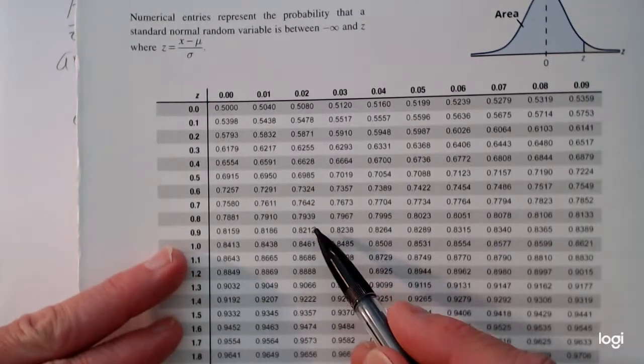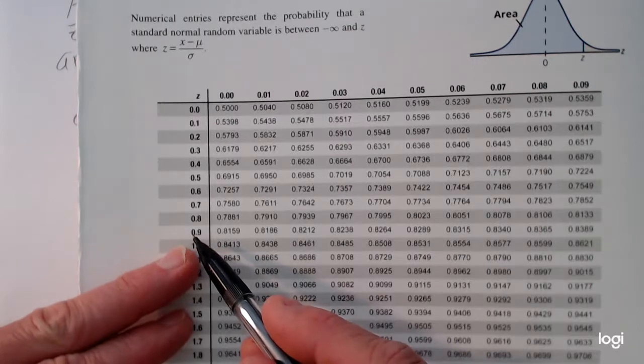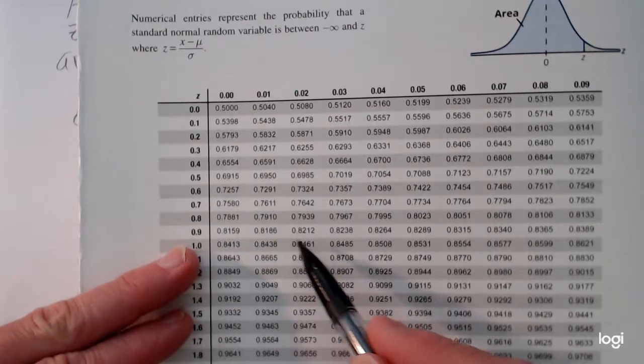So 0.8212, reading to the left, that's going to be a z-score of 0.92.